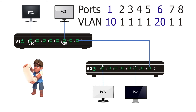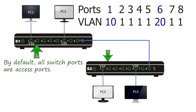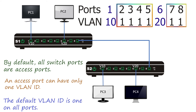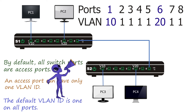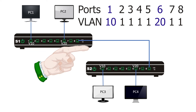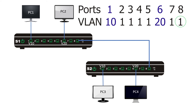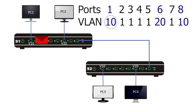By default, all switch ports are access ports. An access port can have only one VLAN ID; the default is VLAN 1. If we change the interconnecting port's VLAN ID to 10, PC1's broadcast frame arriving on port 1 (VLAN 10) is forwarded from port 8 (also VLAN 10) to switch 2's port 8 (also VLAN 10), which then forwards it to PC3 on port 1. This enables VLAN 10 communication between the two switches.